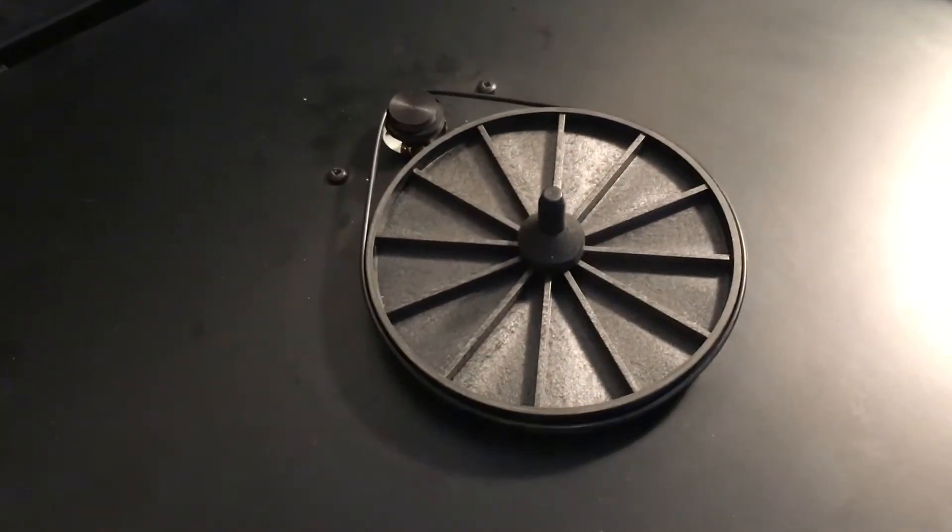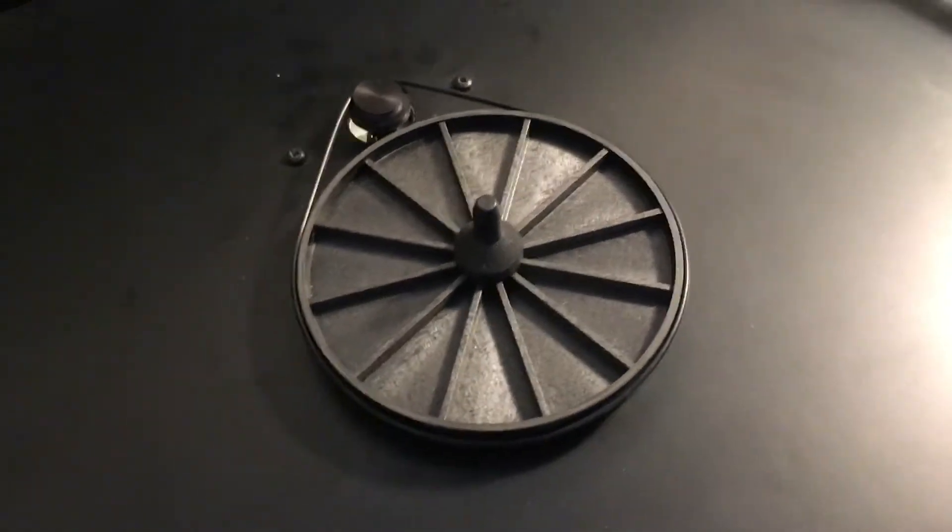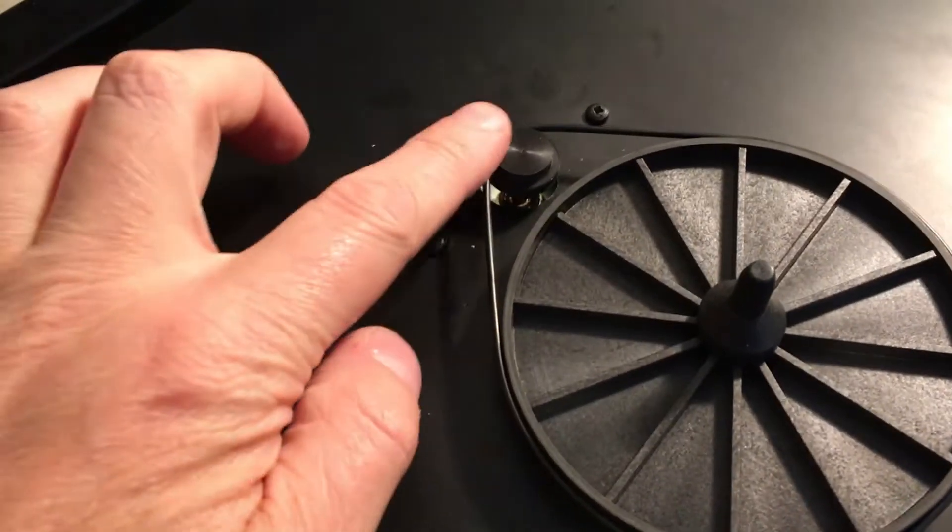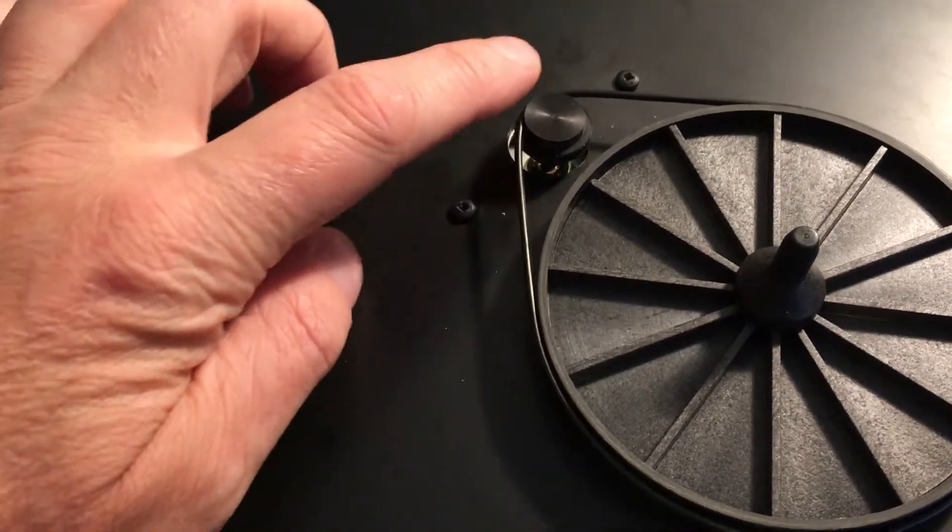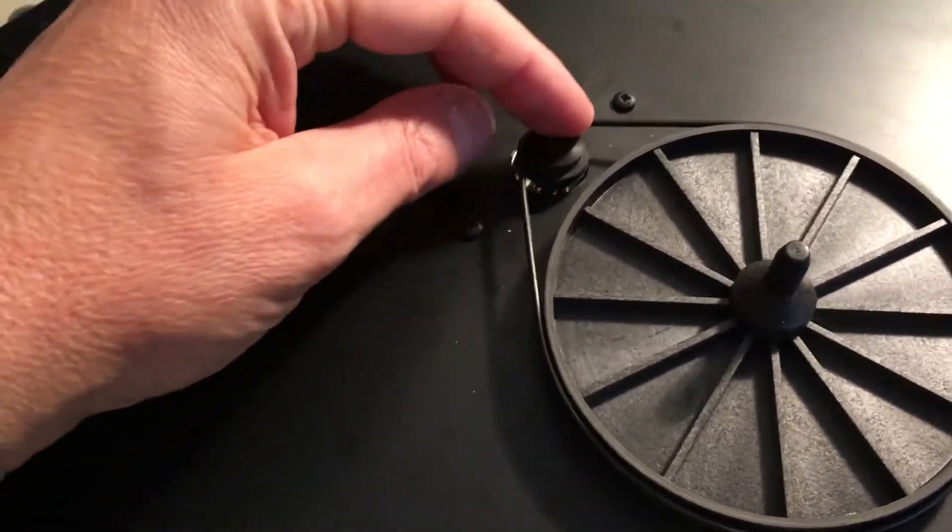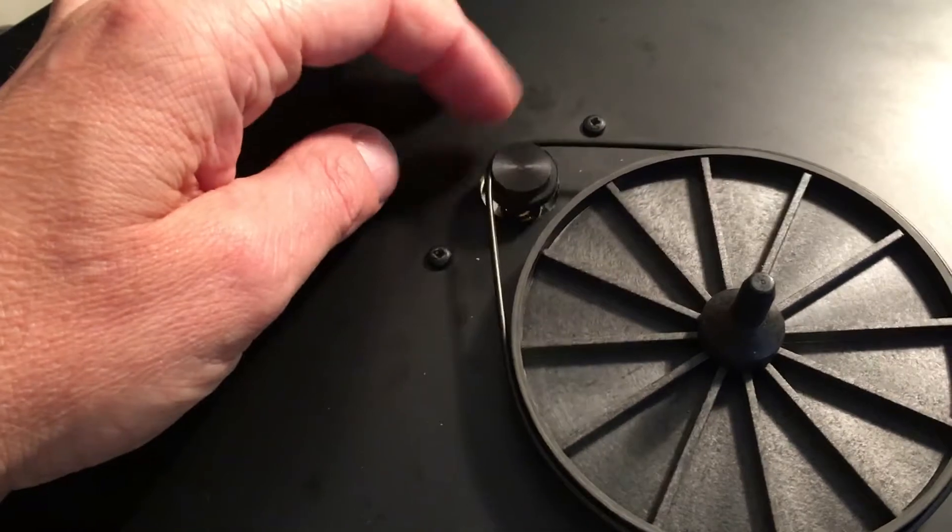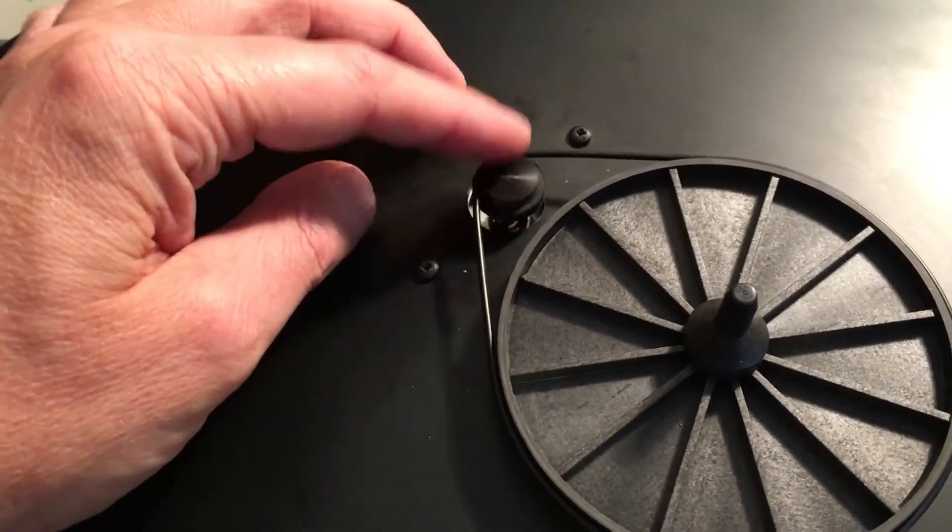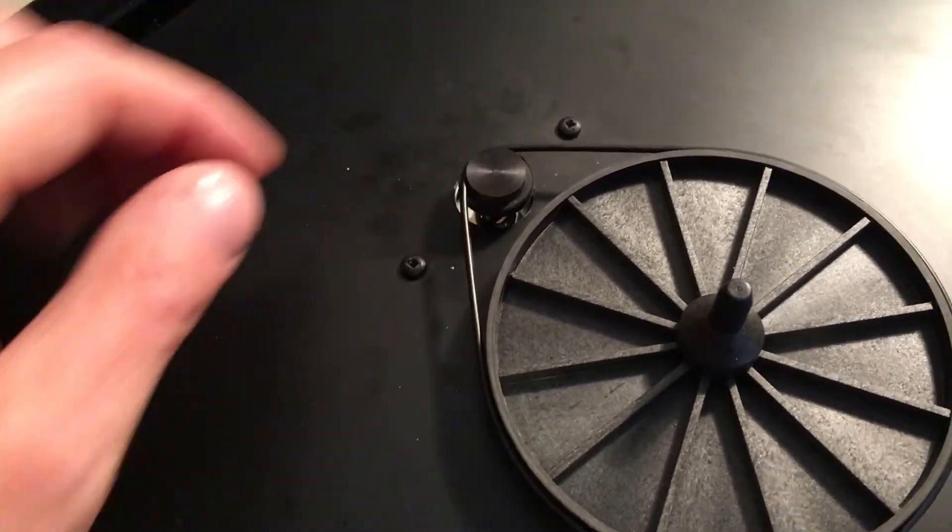Right, I've taken off the glass platter, and underneath we've got the sub platter and the pulley. You can just about see the motor underneath there, and the pulley sits on suspension, so you get this sort of movement, which is to isolate the motor noise from the structure of the deck.